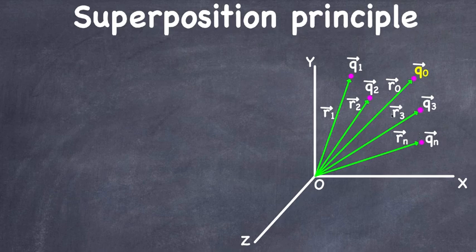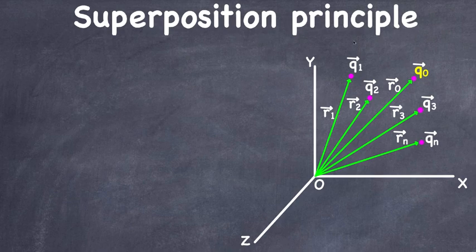R1, R2, R3, and so on are their position vectors. I made a previous video on the Coulomb force between charges in terms of their position vectors, and we're going to use that formula here to calculate the net force on charge Q naught due to all other charges — that is basically the superposition principle.